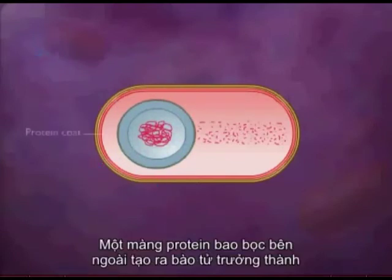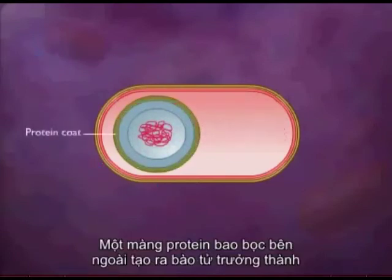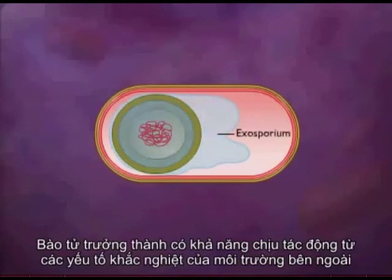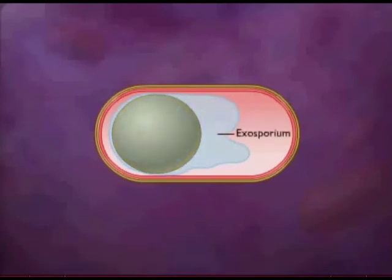A protein coat forms exterior to the cortex and the spore becomes mature. Some spores form an additional layer called the exosporium. A mature spore is resistant to environmental conditions.